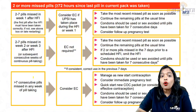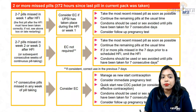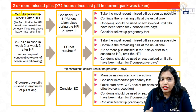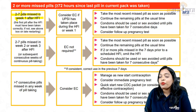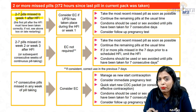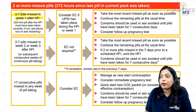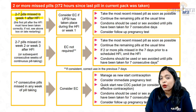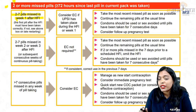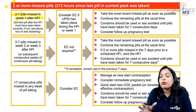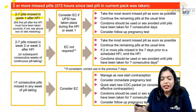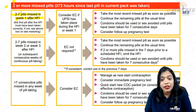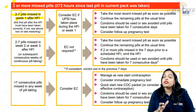But if she misses two or more pills — say two to seven pills — and this is in week 1 after the hormone-free interval: consider emergency contraception if unprotected intercourse has taken place, because the first week is very important. Take the most recent pill as soon as she remembers. Continue the remaining pills. Use additional contraception or condoms for the next seven consecutive days. Consider a follow-up pregnancy test.